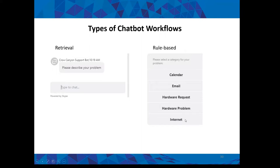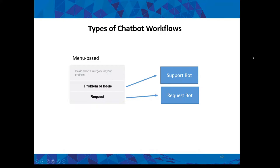With rule-based, it's more guided to exact answers. If it's a paper jam — here, if it's an email problem — there. It's guided rather than an open search. A rule base can also branch into a search. There's also menu-based, where you can say: is this a problem or issue? Branch to the support bot. Is it a request? Branch to the request bot. These would have different workflows attached to them.